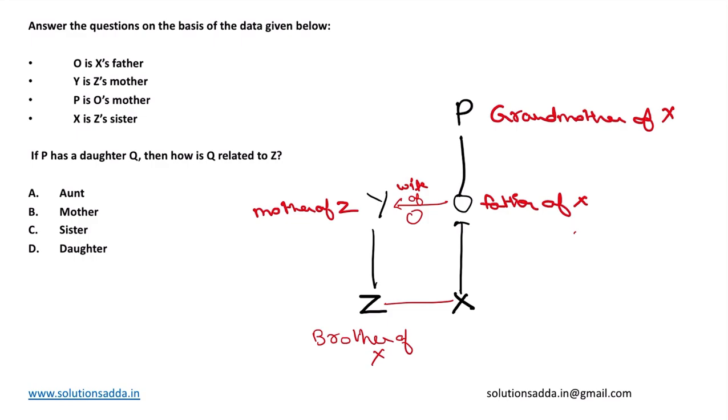If P has daughter Q, suppose P has a daughter Q, then O and Q will be brothers and sisters. She will be sister of O.